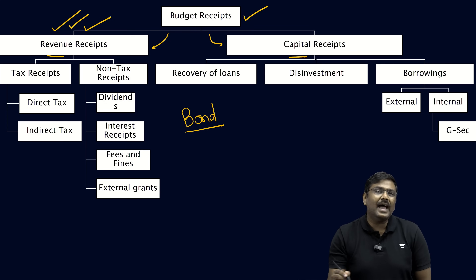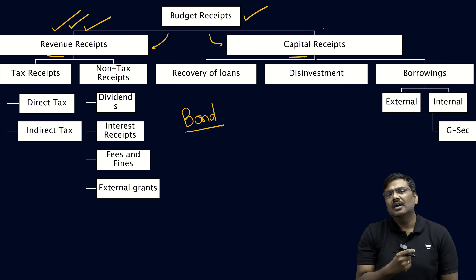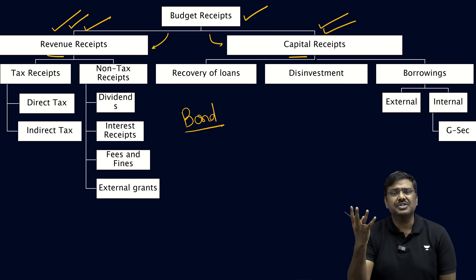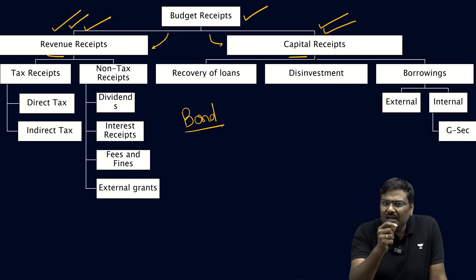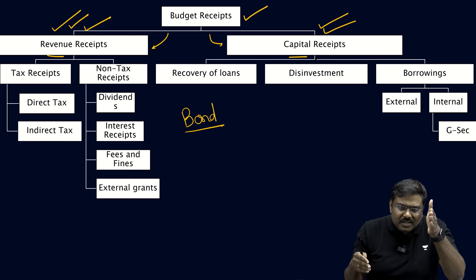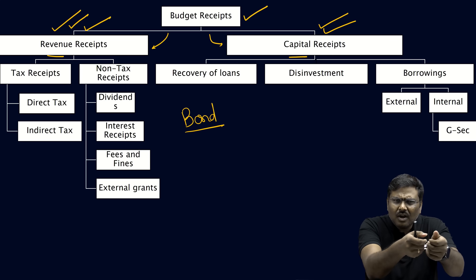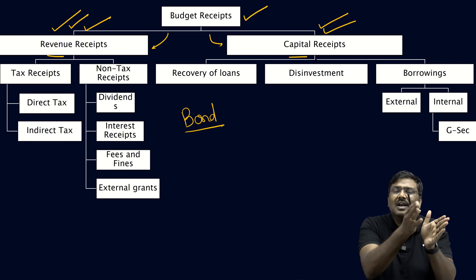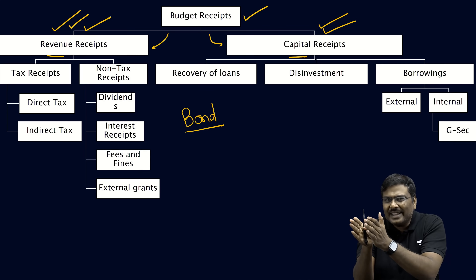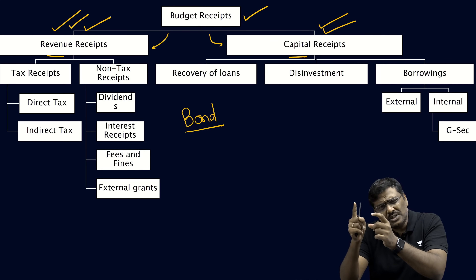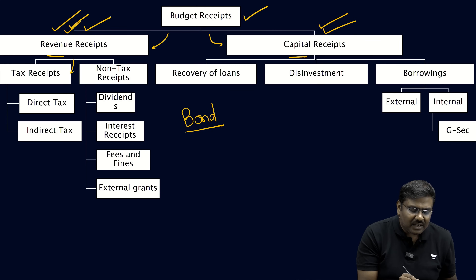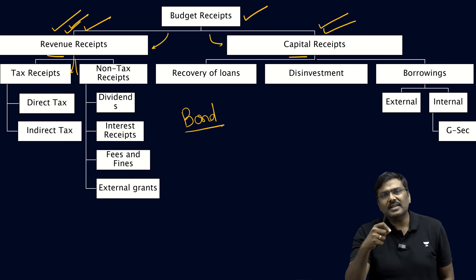Under capital receipts, the assets or liabilities of the government will change. That is the important difference between the revenue account and the capital account. In case of the revenue account, the government either spends or collects money, but there is no change in the assets or liabilities of the Government of India. In the capital account — either expenditure or receipts — there is always a change in assets or liabilities. Revenue receipts are divided into two types: tax receipts and non-tax receipts.